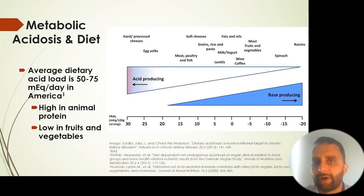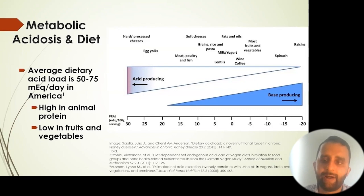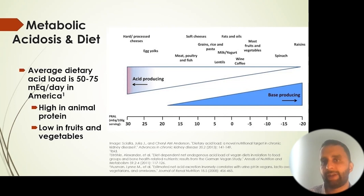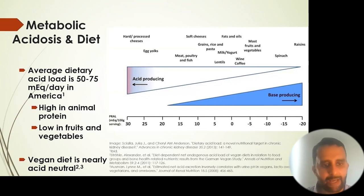Then you start moving into foods that are less neutral and more basic. These include fruits and vegetables — spinach — and ultimately raisins. Raisins are listed at the far end because they are dehydrated grapes, so they have a concentrated amount of base per 100 grams since the water content has been removed. Many dried fruits and vegetables would have a higher net base content, but for those with kidney disease, the problem is potassium, especially with dried fruits and vegetables.